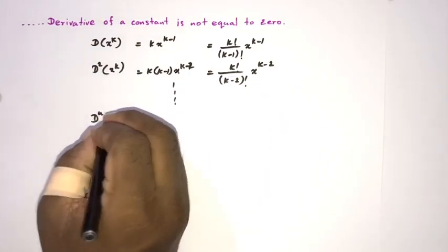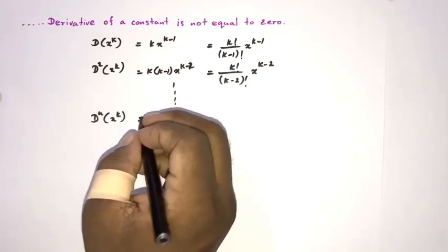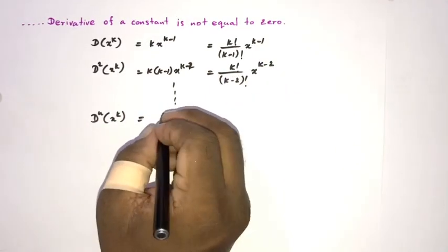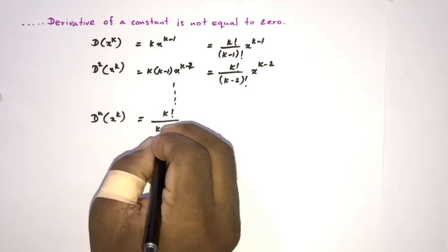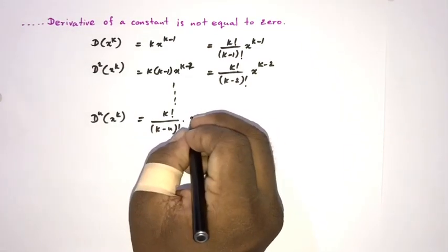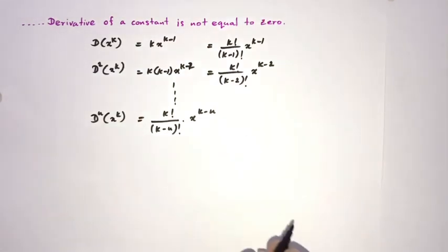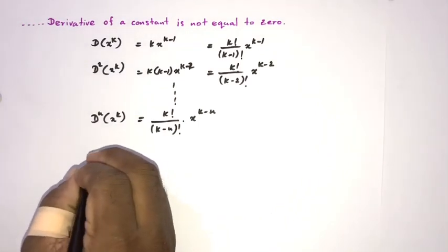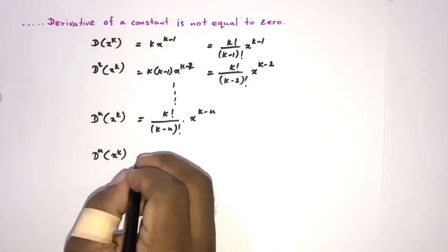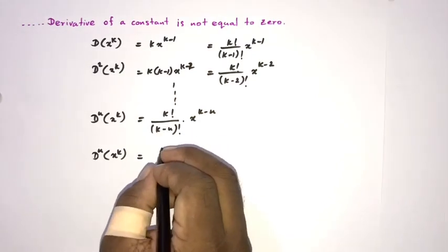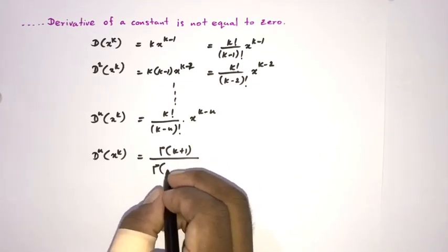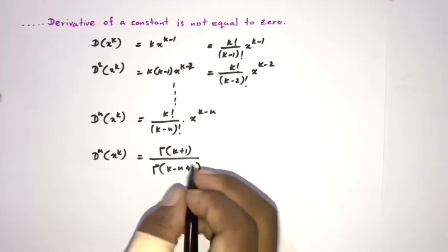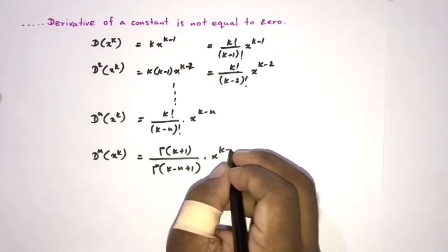Similarly, we can write the nth derivative of x to the k as k factorial over (k minus n) factorial times x to the k minus n. Using the gamma function representation, k factorial equals Γ(k+1), so the nth derivative of x to the k is Γ(k+1) over Γ(k minus n plus 1) times x to the k minus n.